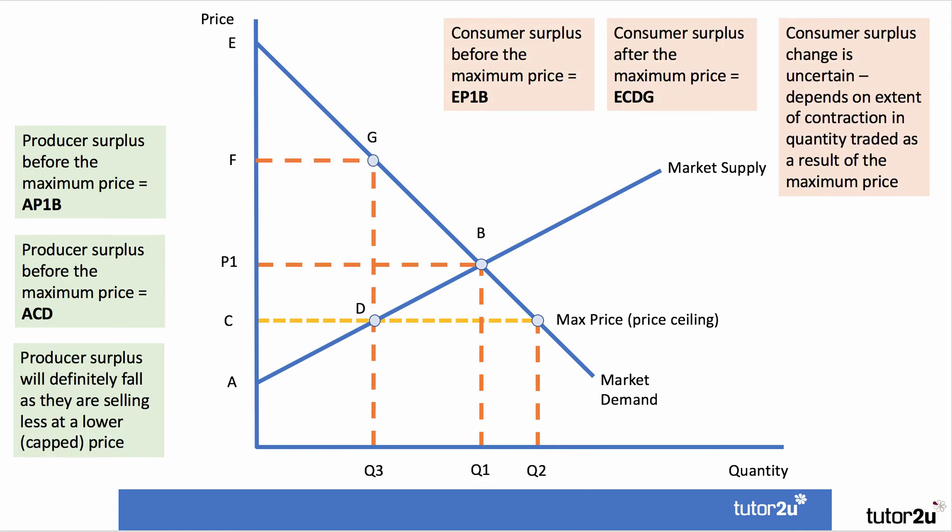Consumer surplus before the maximum price is area E, P1, B. After the maximum price, they're better off in the sense that the price is lower, getting more consumer surplus — but output has been restricted to Q3. So the area of consumer surplus after is E, C, D, G. There's been an area of gain and an area of loss. We can't be sure what happens — it depends on the extent of the quantity fall, how low the maximum price is, and the elasticity of demand and supply. Therefore, the change is uncertain — hence the answer C.